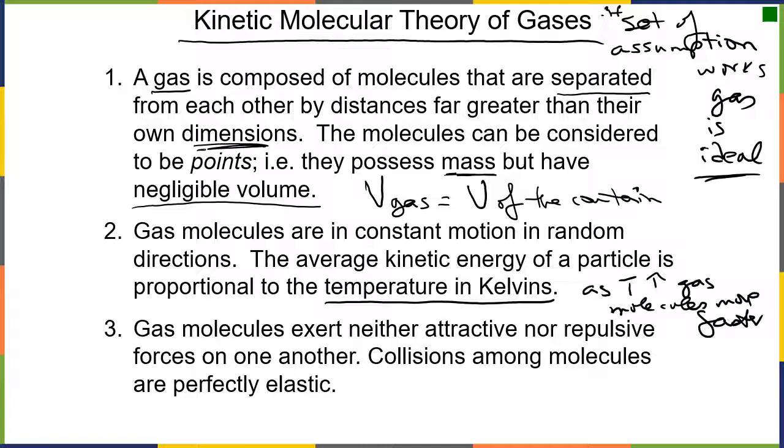Third assumption: gas molecules exert neither attractive nor repulsive forces on each other, and collisions are perfectly elastic. Like playing pool or marbles - one ball hits another and they bounce off. They never stick and never push each other away. They never act like real molecules. Collisions are perfectly elastic. This is the biggest problem with our theory. To summarize the kinetic theory: if gas molecule volume is negligible, if they're in constant motion in random directions, and if collisions are elastic, the gas is ideal and our equations work.